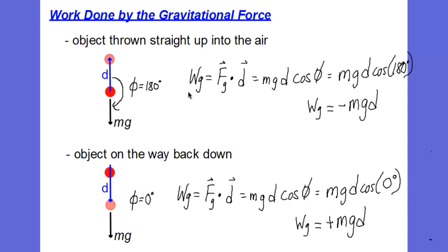And we know that the work done by a force is the dot product of the force and the displacement. So the force is the weight, so that's mg. The displacement is d and phi is the angle between them. And if it's 180, we know the cosine of 180 degrees is negative one. So our equation becomes work due to gravity is equal to negative mgd.